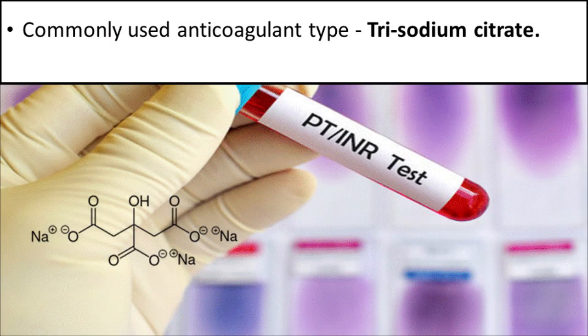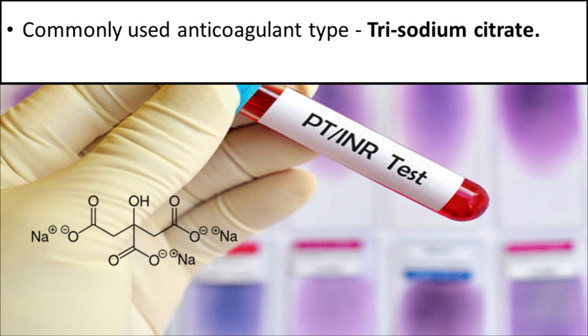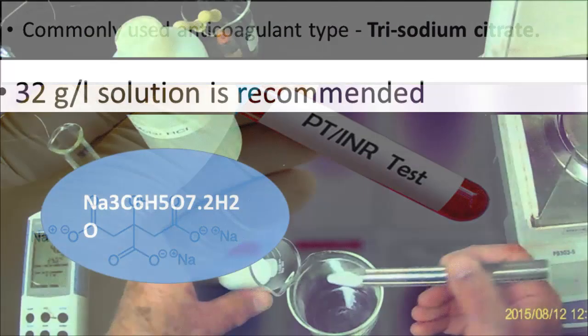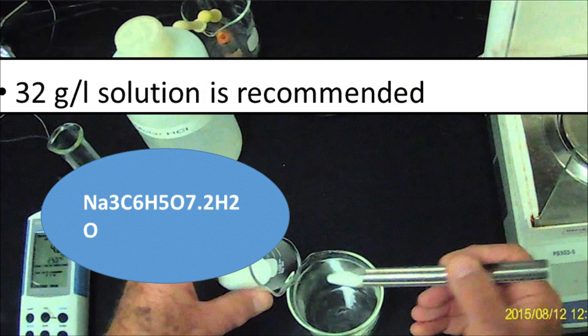The most commonly used anticoagulant type for coagulation testing is trisodium citrate. A 32 grams per liter citrate solution is the recommended concentration for coagulation testing.